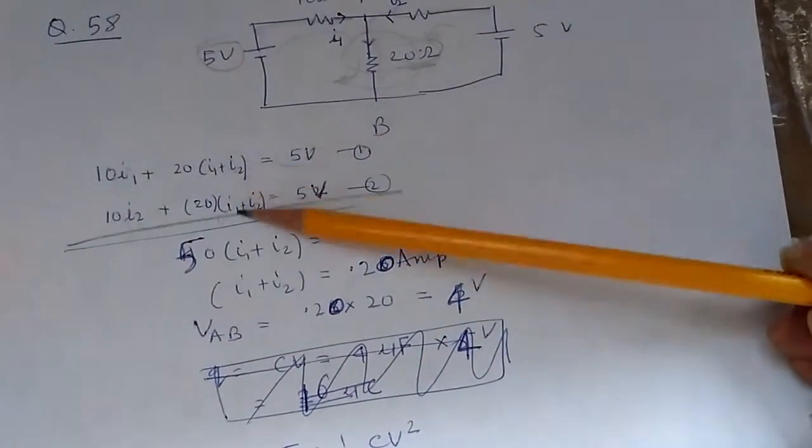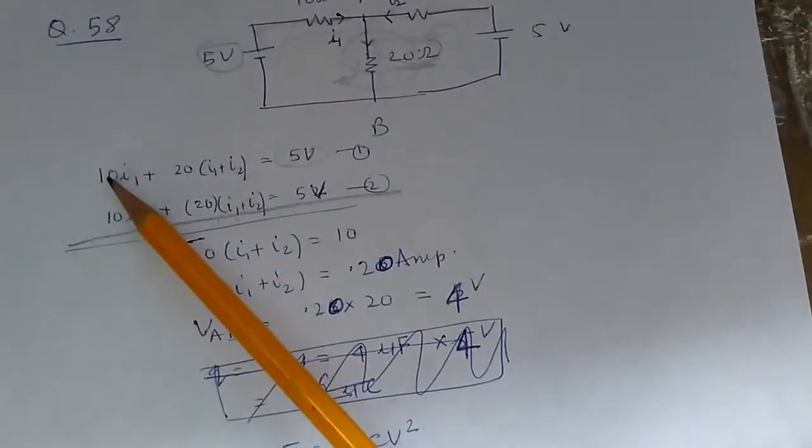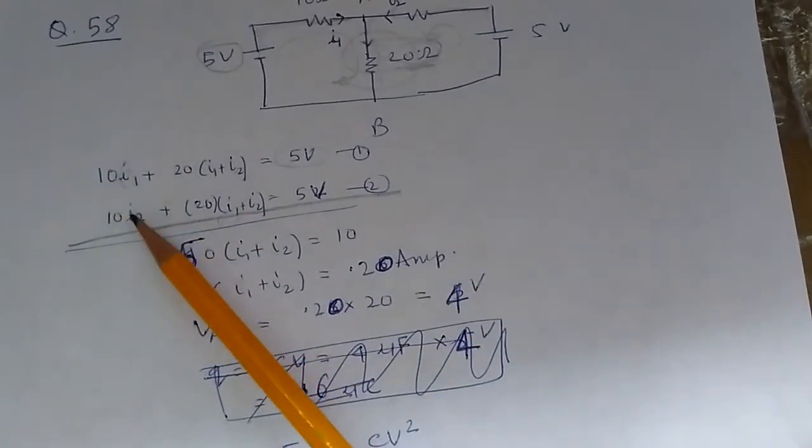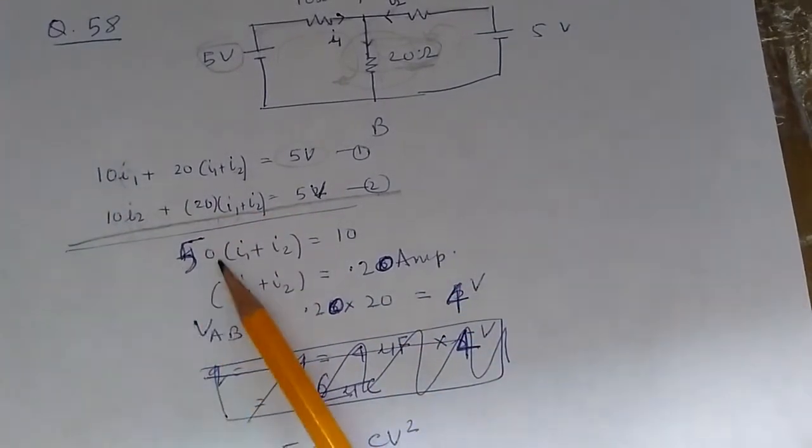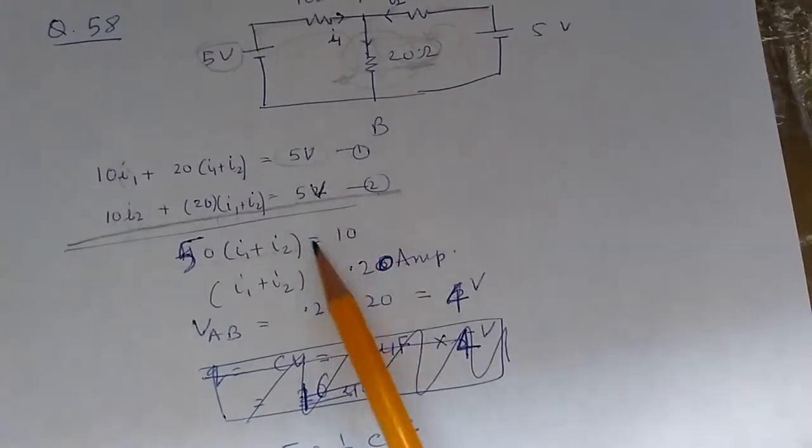Add both equations. You get 20 times I1 plus I2, plus another 20 times I1 plus I2 equals 40 times I1 plus I2, plus 10 times I1 plus I2. So 40 plus 10 gives 50 times I1 plus I2 equals 10.